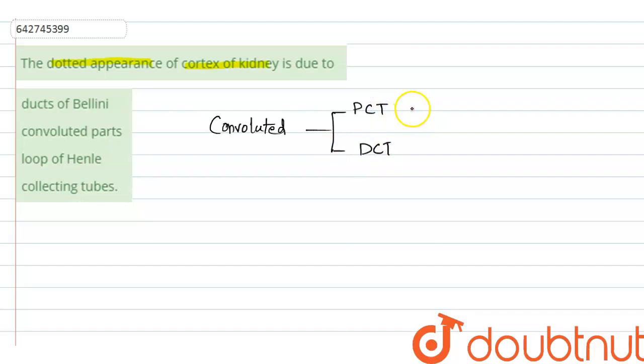Now from the options we have to choose the option that has convoluted parts.